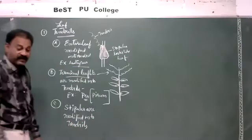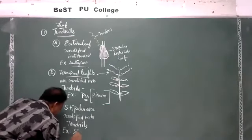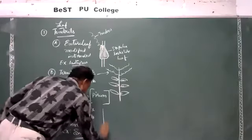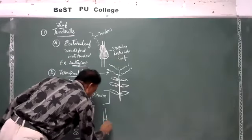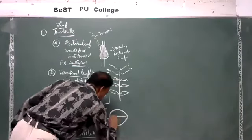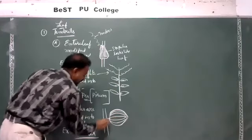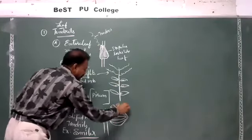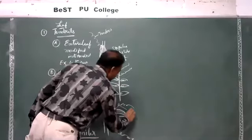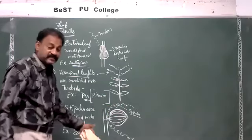The third example: stipules are modified into tendrils. Example: Smilax. Here in the diagram of Smilax, we can see the node, and the stipules are modified into structures that look like tendrils, but in reality they are stipules.